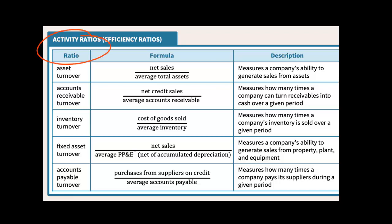Activity ratios are really helpful with financial statement analysis because they tell us how good the company is at performing certain types of activities. That's why activity ratios are also called efficiency ratios. They tell us how efficient a company is when it comes to using its assets to generate sales — that's the asset turnover — or how efficient it is at collecting its accounts receivable promptly or selling its inventory quickly.